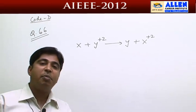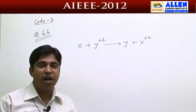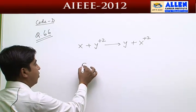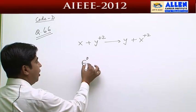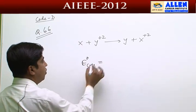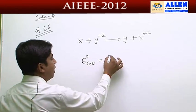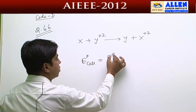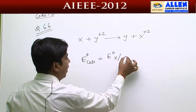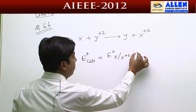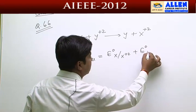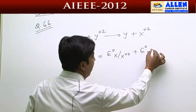To calculate the data, we want to calculate E° cell. E° cell equals the standard oxidation potential of X plus the standard reduction potential of Y.